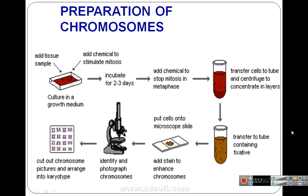The cells are transferred to a tube containing fixative, which fixes the chromosomes in place so they cannot move and can be easily observed. Then cells are spread onto a microscopic slide and stain is added to enhance the chromosomes — staining improves visual appearance so chromosomes can be identified and photographed.